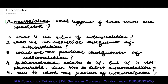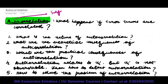In this lecture we are going to begin with the concept of autocorrelation. Auto means self, correlation means related to each other. So the question we are asking is: what happens if the error terms are correlated with each other?